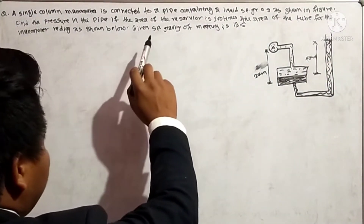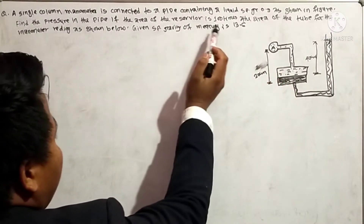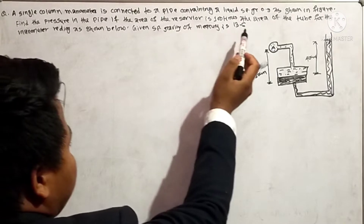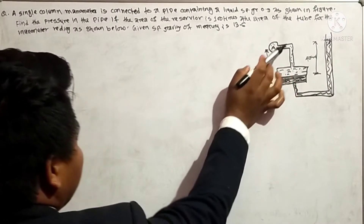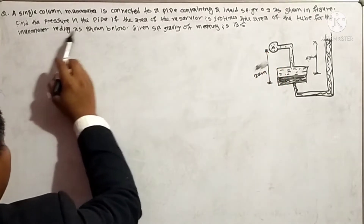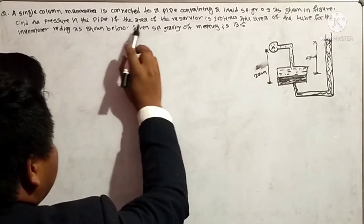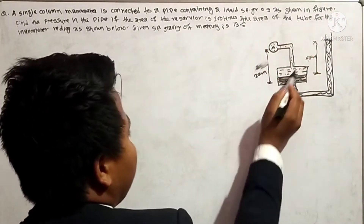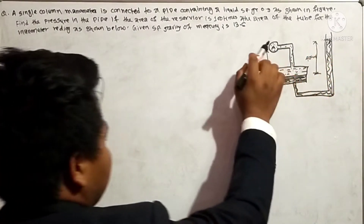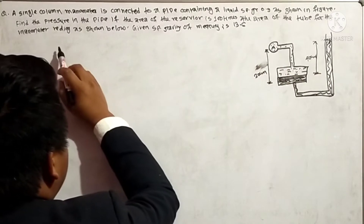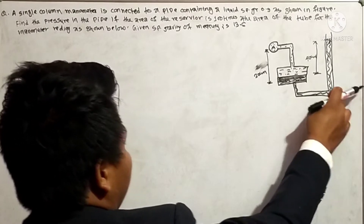A single column manometer is connected to a pipe. The specific gravity of the manometer fluid (mercury) is 13.6. The area of the reservoir is 100 times the area of the tube. The manometer reading S1 is below the datum line.